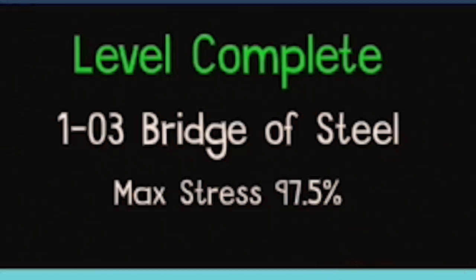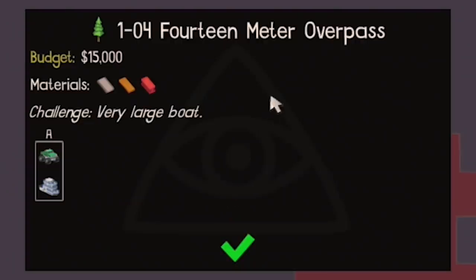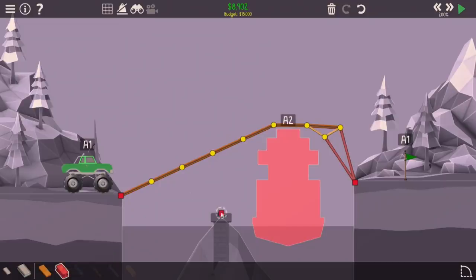Next rest, $97.5. Someone managed to do that for $5,000. They're a genius. 14 meter overpass. Challenge very large boat. I've always been good at the boat levels because generally they're not really much harder than something like this.